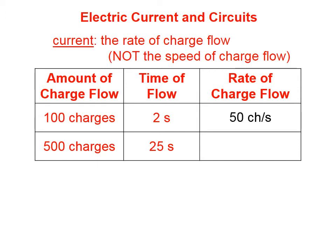So the rate of charge flow, if a hundred charges pass a fixed point in two seconds, the rate of charge flow is 50 charges per second. Five hundred charges in 25 seconds, the rate of charge flow is 20 charges per second.